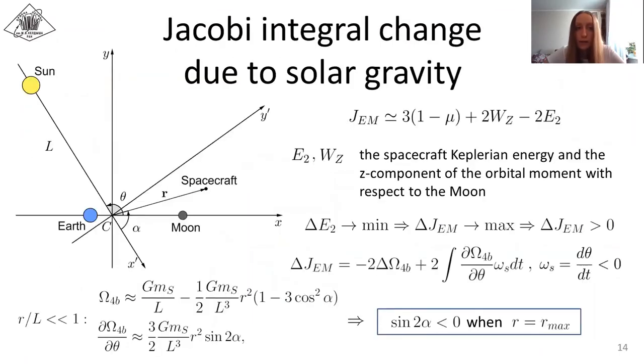Now, let us analyze the change of the Jacobi integral due to the solar gravity. As it is seen from the expression of the Jacobi integral in the vicinity of the Moon, to minimize the spacecraft Keplerian energy with respect to the Moon, the increment of the Jacobi integral due to the sun perturbations should be positive. Taking into account the spacecraft equations of motion in the planar BR4BP model, the change of the Jacobi integral along a certain trajectory may be represented in the following form. So the condition of its positivity is satisfied when the following constraint is met.